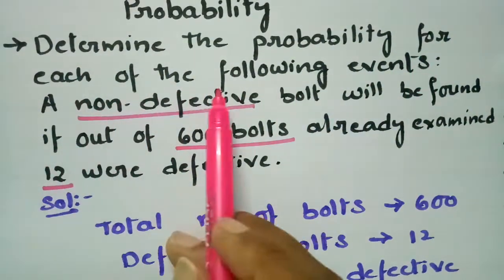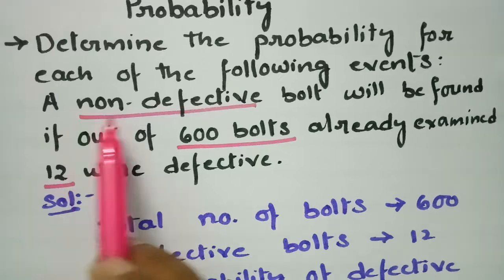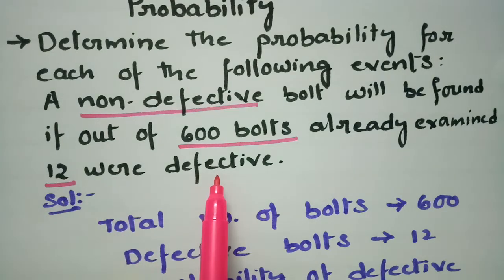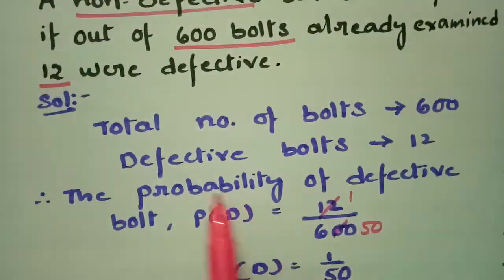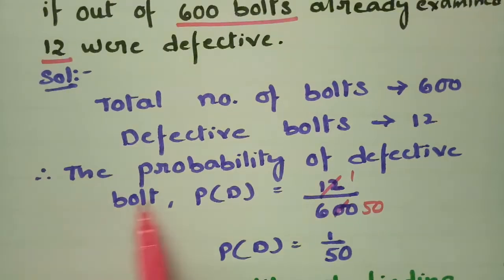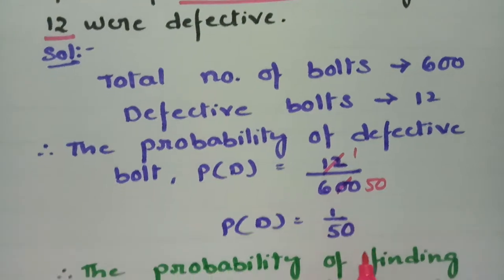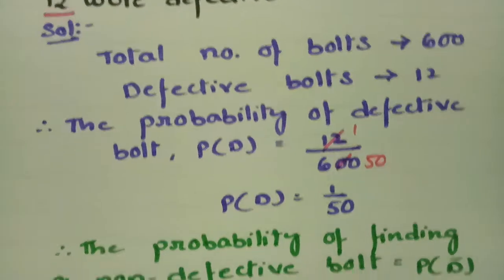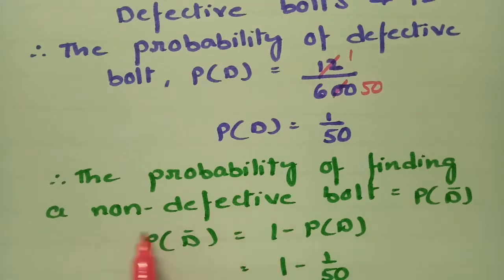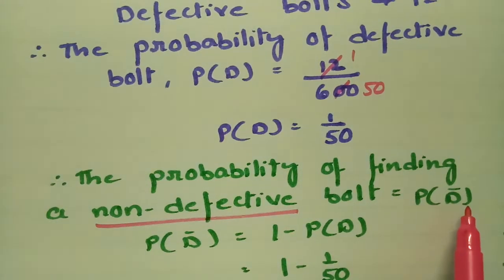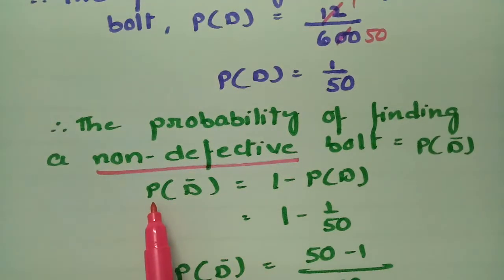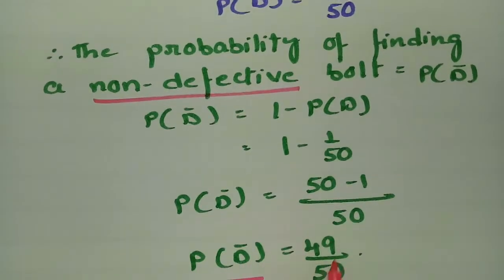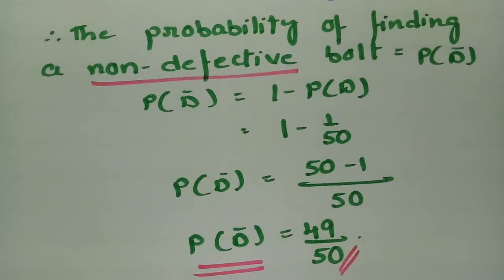To summarize: total number of bolts is 600, defective bolts is 12. The probability of a defective bolt is 12 by 600, equal to 1 by 50. The probability of a non-defective bolt is its complement, P(D'), equal to 1 minus P(D), that is 1 minus 1 by 50, which equals 49 by 50.